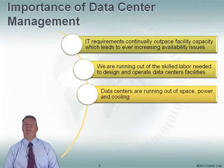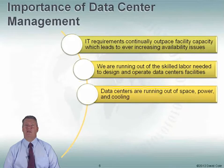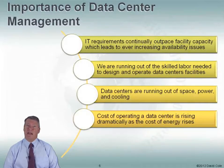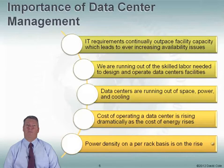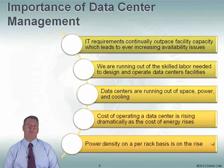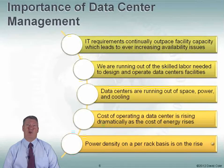Data centers are continually running out of the three big resources: space, power, and cooling. The continual issues we face in the data center are resource usage, particularly in space, power, and cooling. The cost of running a data center is continuing to rise — in fact, it's rising dramatically. As the cost of energy rises, the cost of operating a data center rises dramatically. And the power density on a per-rack basis is also on the rise. What used to be one, two, and three kilowatts per rack is now five, six, 10, 15 kilowatts per rack, creating issues with both powering and cooling.